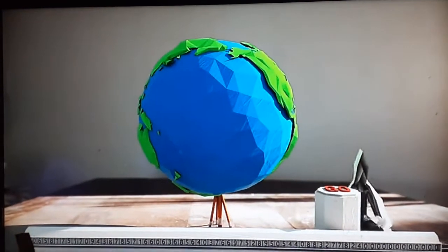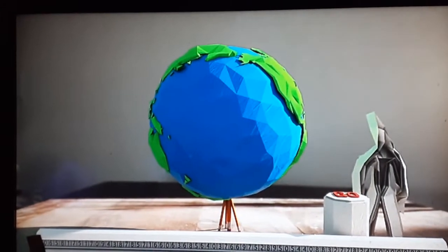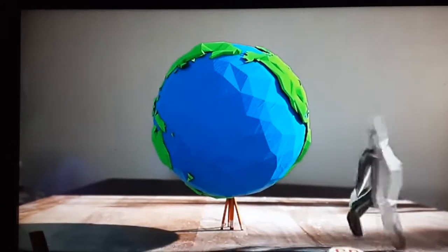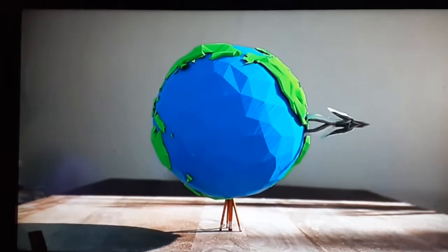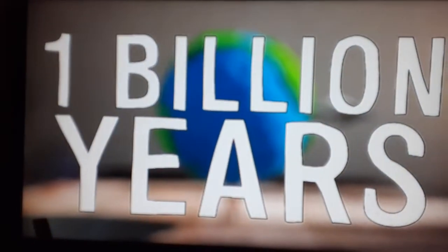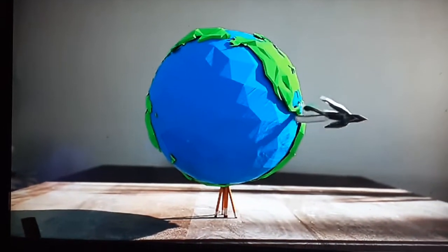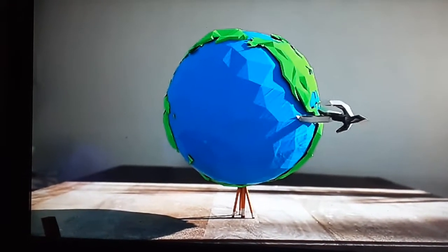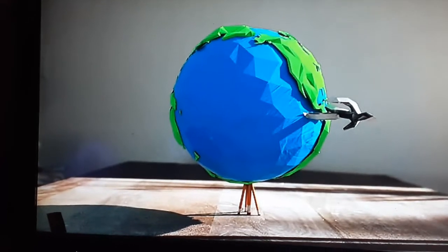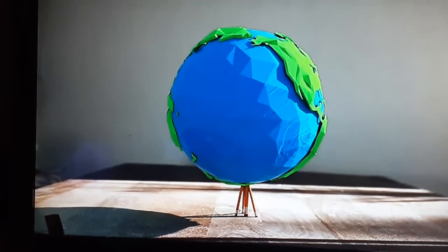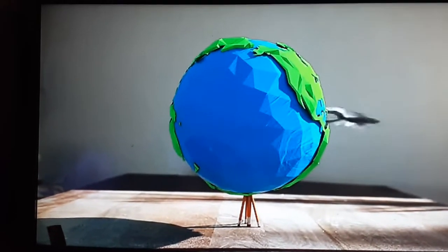Imagine setting a timer to count down 52 factorial seconds. While the timer runs, stand on the equator and wait 1 billion years. After a billion years have passed, take a single step forward, and then wait another billion years before taking a second step, and so on. Once you have walked all the way around the Earth,